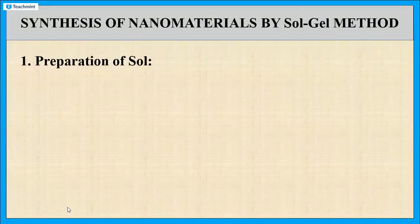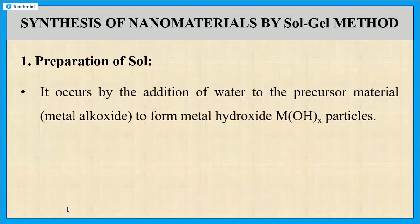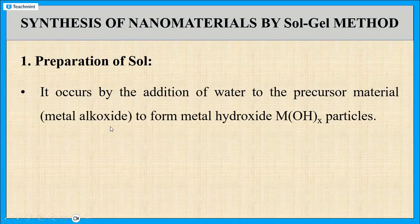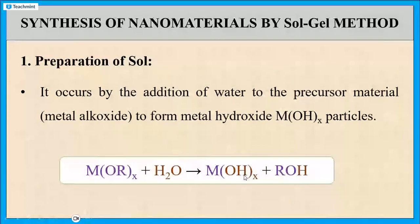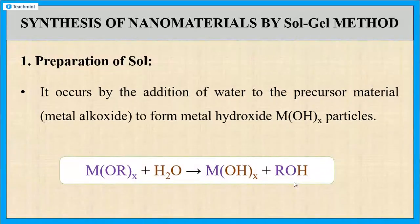The first step is the preparation of Sol. In this step, water is added to the starting material, the precursor, which is metal alkoxide M(OR)x. The metal alkoxide reacts with water molecules and the formation of metal hydroxide M(OH)x takes place, along with the formation of alcohol. This reaction creates a stable colloidal solution known as Sol.